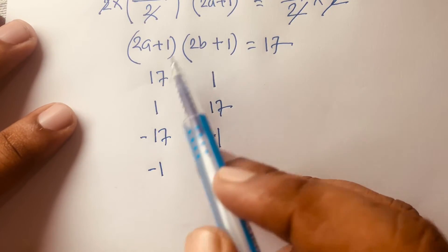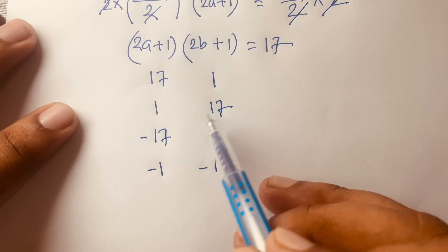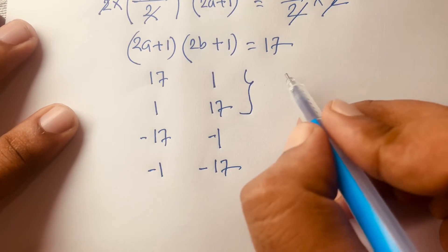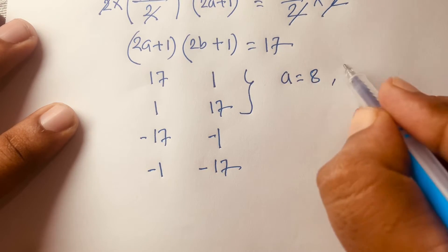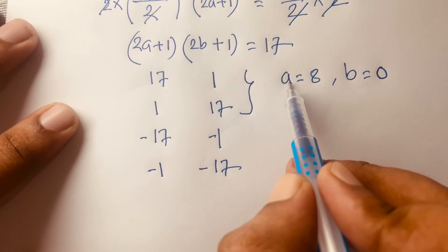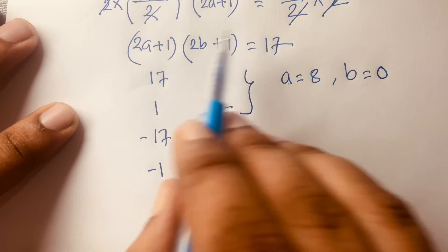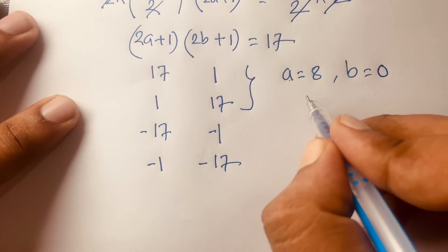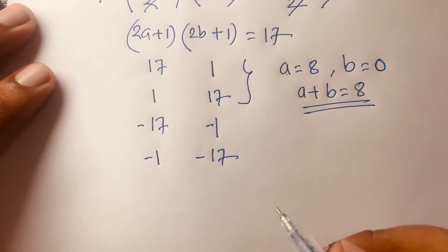So when 2a plus 1 equals 17 and 2b plus 1 equals 1, we get a equals 8 and b equals 0. Check: 2 times 8 equals 16, plus 1 equals 17; and 2 times 0 plus 1 equals 1; so 17 times 1 equals 17. Therefore a plus b equals 8.